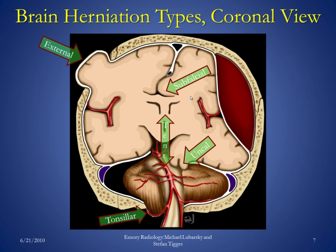Additionally, uncal herniation is herniation of the uncus, which is the most medial portion of the temporal lobe. Whenever the uncus herniates, it herniates towards the opposite side, and the structure it often compresses is the brain stem, which is vital to survival. If the brain stem is compressed, death often ensues unless corrected.